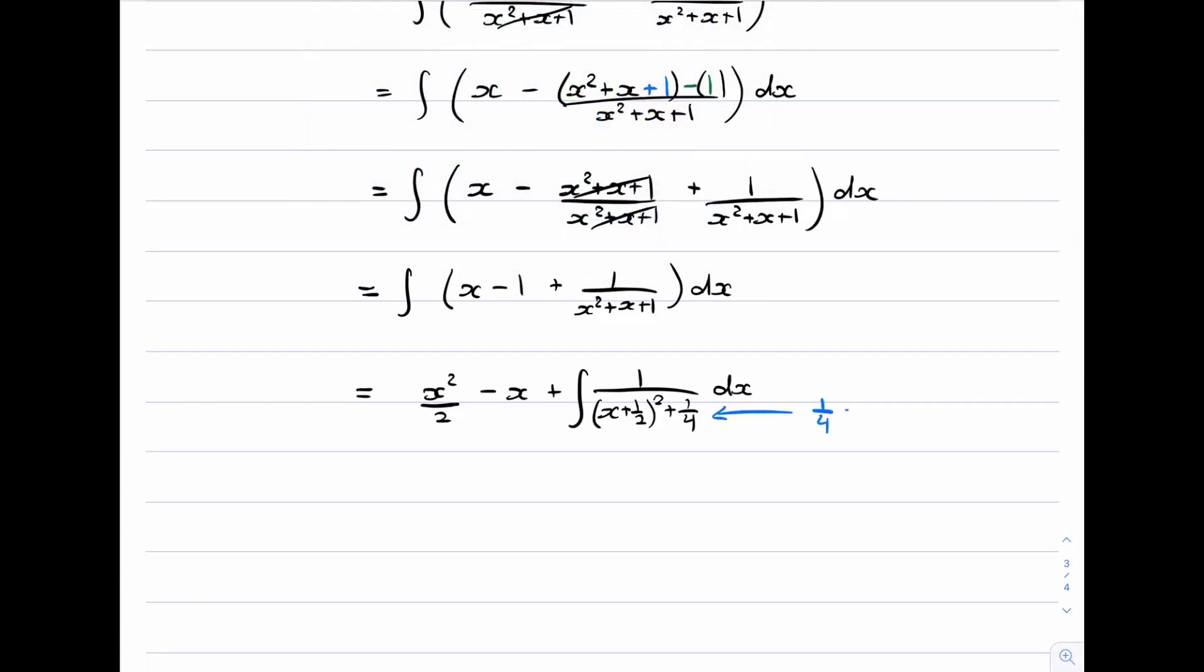One thing we need to be very careful of is this quarter. So a quarter is really a half squared. And so on our standard form, the half is equal to a. So just applying our standard form now, we get 1 over a, which is 1 over a half, times tan inverse of our f of x. Well, f of x here is this bit, x plus a half, divided by a, which is 1 on 2.